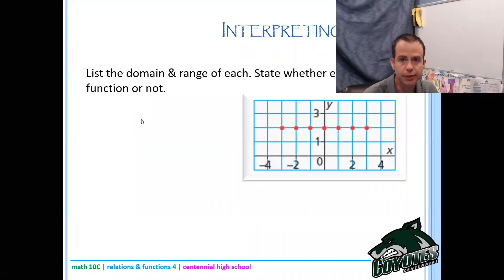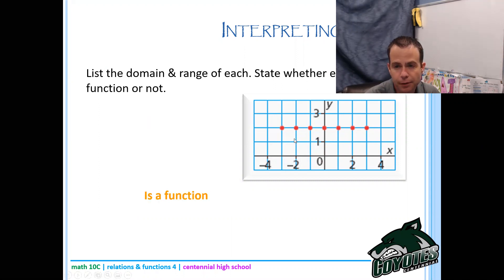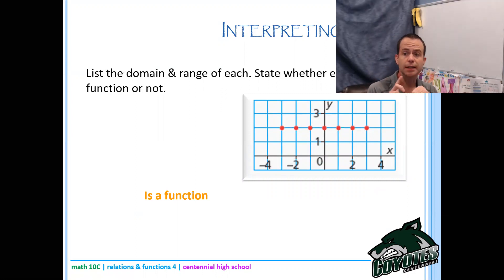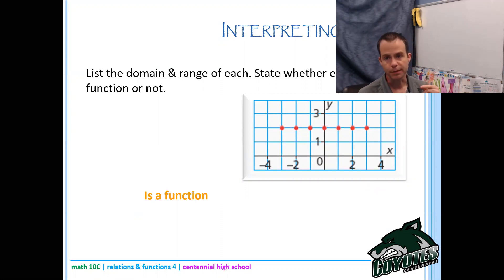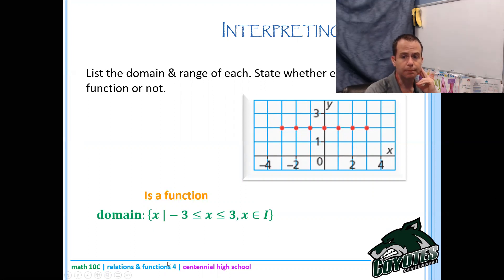We'll go through a couple of pictures as a reminder from yesterday - stating whether they're a function or not, and stating the domain and range. This graph is a function; it passes the vertical line test. The domain goes from negative 3 to 3. This is discrete data - the dots aren't connected, so nothing exists in between. I can list them: X equals negative 3, negative 2, negative 1, 0, 1, 2, 3. Or since those are every integer between negative 3 and 3, I can write negative 3 ≤ X ≤ 3 where X is a member of the integers.